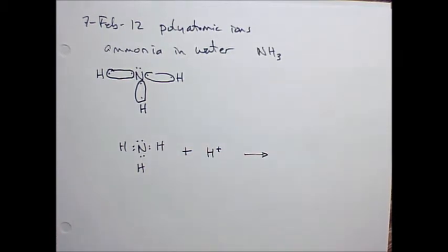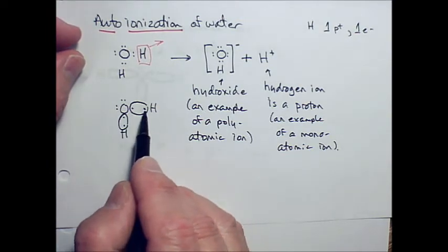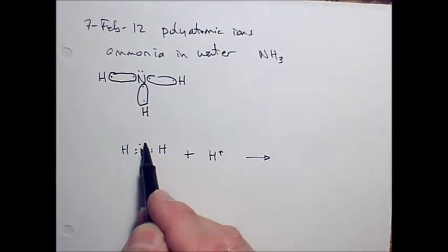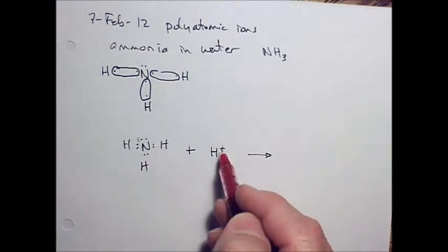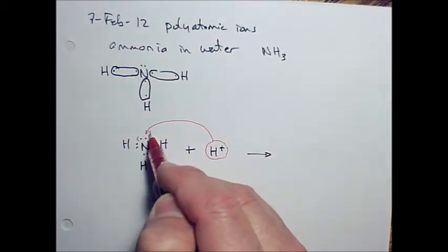Well, hydrogen ions don't really like to be by themselves. They really want those two electrons to be more stable. Originally, hydrogen joined up with oxygen in a way that gave hydrogen two electrons to be more stable. Ammonia here has a couple of electrons sitting up here, a lone pair of electrons, and what actually happens is this hydrogen can go up here and share those electrons.